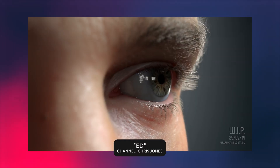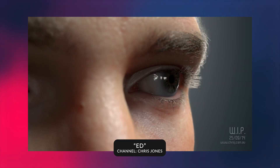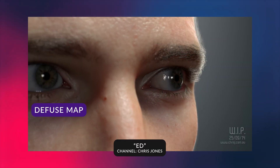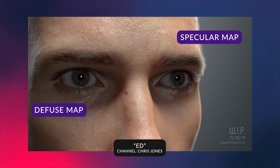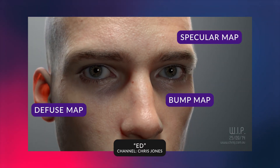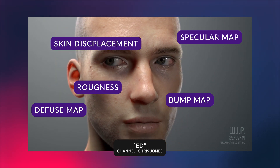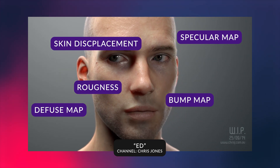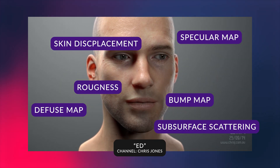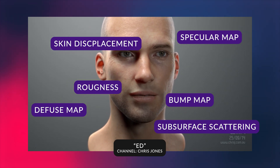Then comes texturing. Having realistic looking skin is difficult. There are so many factors: the diffuse map, the specular map, the bump map, the roughness, displacement of the skin, and also the subsurface scattering.